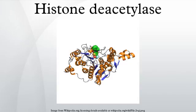Histone deacetylase inhibitors have a long history of use in psychiatry and neurology as mood stabilizers and anti-epileptics, for example valproic acid. In more recent times, HDIs are being studied as a mitigator or treatment for neurodegenerative diseases. There has also been an effort to develop HDIs for cancer therapy. Vorinostat was approved in 2006 for the treatment of cutaneous manifestations in patients with cutaneous T-cell lymphoma that had failed previous treatments, and a second HDI was approved in 2009 for patients with CTCL. The exact mechanisms by which these compounds may work are unclear, but epigenetic pathways are proposed.